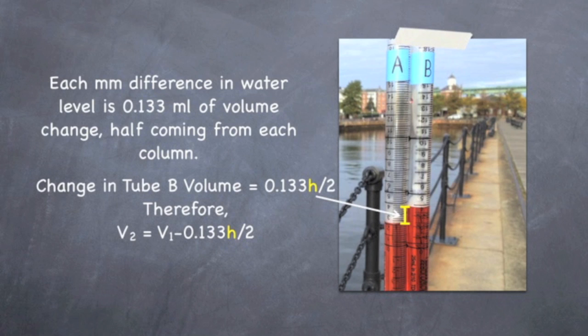But how do we get from differences in water levels that we measured in the field to changes in volume of tube B, which is what we need for our actual calculations?